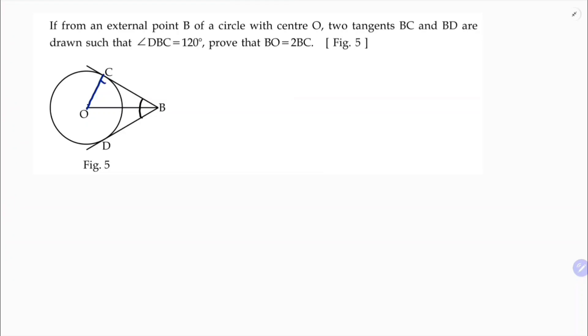I know that here it is 90 degrees because of the angle between radius and tangent. If we join this, these two triangles will be congruent. So this angle will be 60 degrees and this also will be 60 degrees.